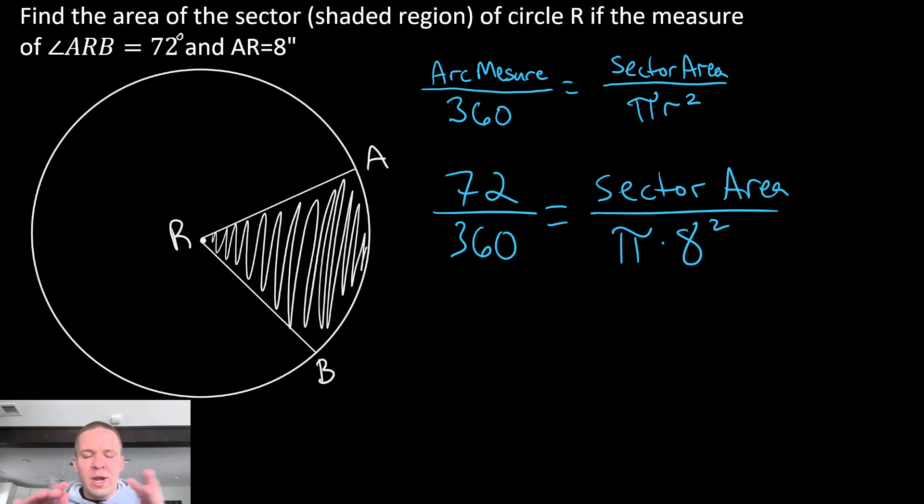Okay, so we're gonna have to cross multiply here, and I think I will just do a little bit on our calculator. So we're gonna have 72 times eight squared, which is 64, and I'm gonna get 4,608 pi equals 360, and I'll go ahead and call my sector area, we'll just call it x for now.